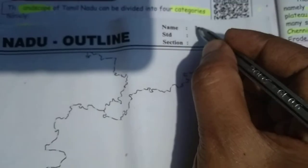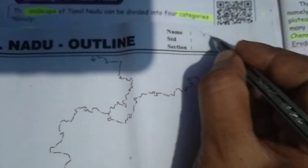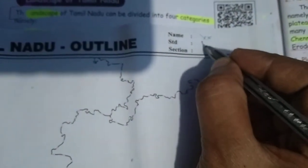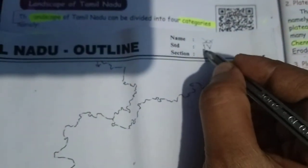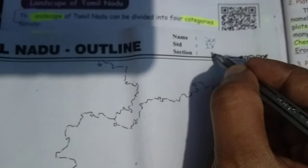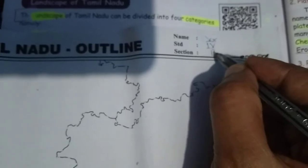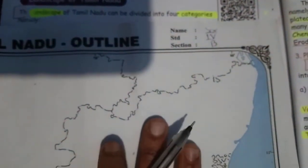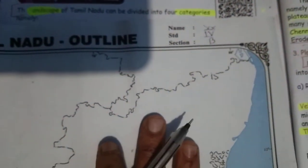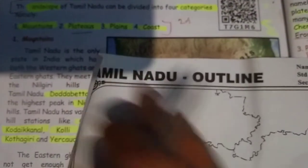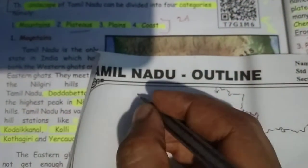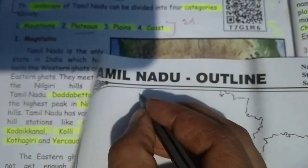Here, write your name, write your strand and section. First, you have to draw the 4 directions.